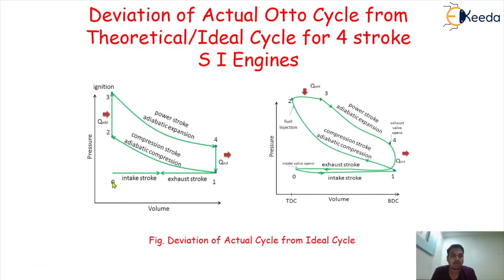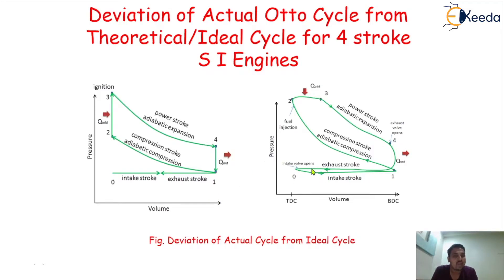We know this particular Otto cycle with its different curves: 0 to 1 is suction, 1 to 2 is compression, 2 to 3 is heat addition, 3 to 4 is expansion, 4 to 1 is heat rejection, and 1 to 0 is exhaust. This is the theoretical Otto cycle. But when we apply this to the actual engine and measure the cycle of operation, we will never get a curve like this.